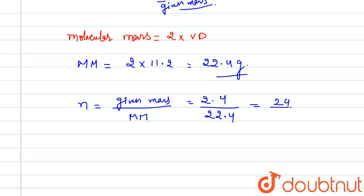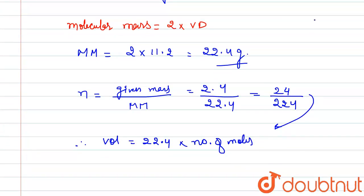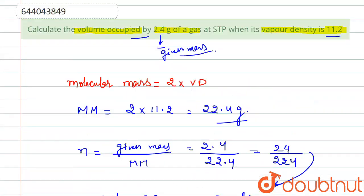Now if we talk about volume — at STP, the volume equals 22.4 liters into number of moles. Putting in the value: volume equals 22.4 into 24 divided by 224. Solving this, the volume comes out to be 2.4 liters.